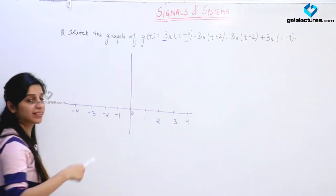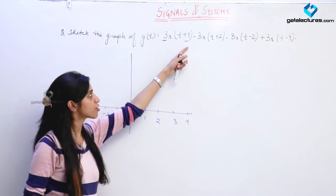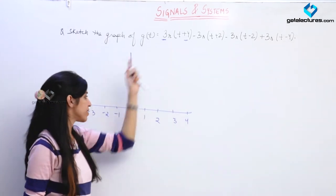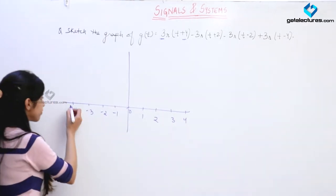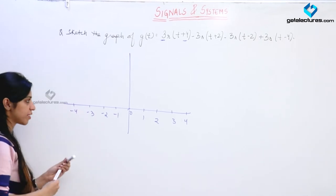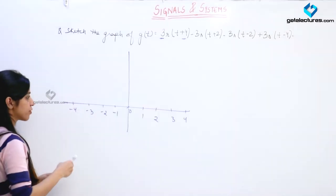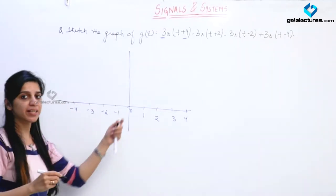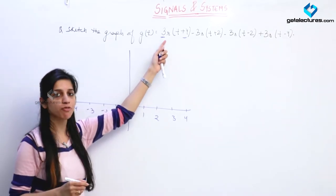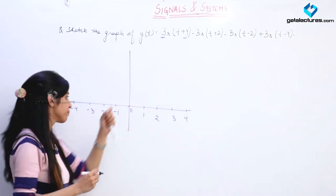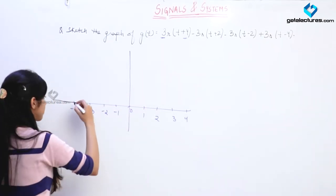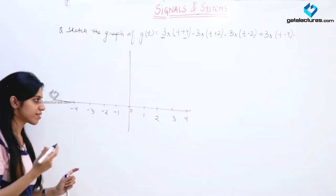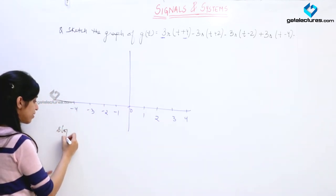At T equal to minus 4, a slope of plus 3 is happening, which means that previously the slope of this line along the x-axis was 0. Now I need a slope change of plus 3, which means that at minus 4, slope of plus 3 begins.